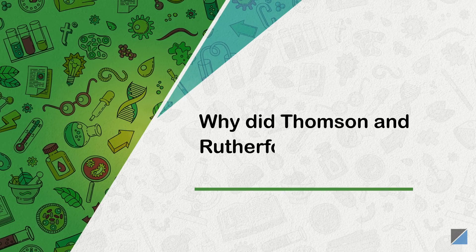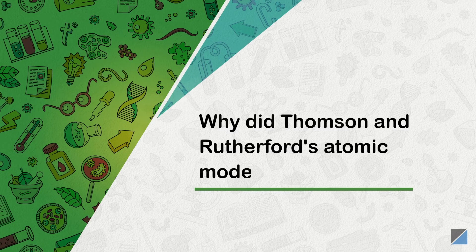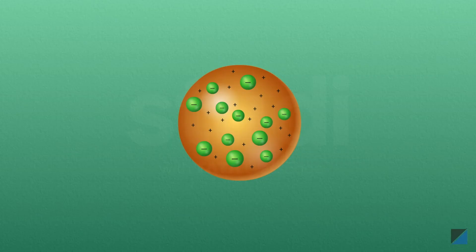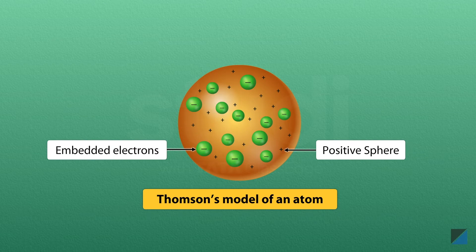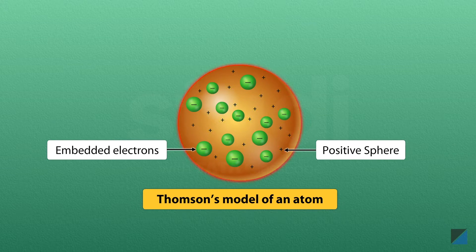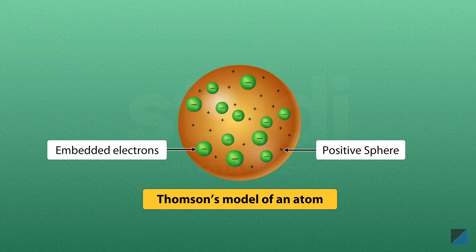Thomson's atomic model is the simplest model of an atom showing the arrangement of electrons and protons. In this model, the positive charge of an atom is evenly distributed in a sphere and the negative electrons are embedded in it.